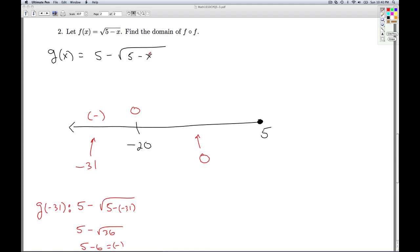I plug 0 in, I get 5 minus the square root of 5, which is not a perfect square. You could change this to test it at 1 if you want, 5 minus the square root of 4, which would be 5 minus 2, which is positive. You could do that, or you could stick with the 0 and know that the square root of 5 is less than 5. It doesn't matter how you do it.